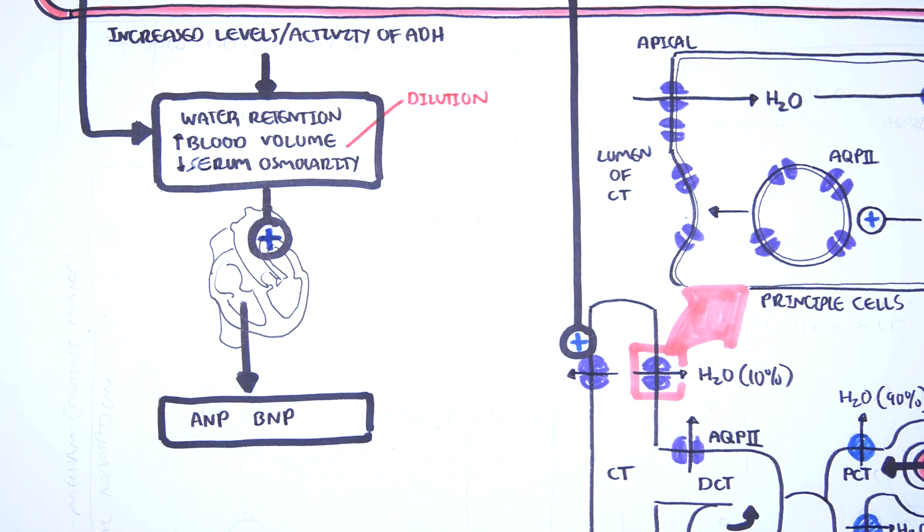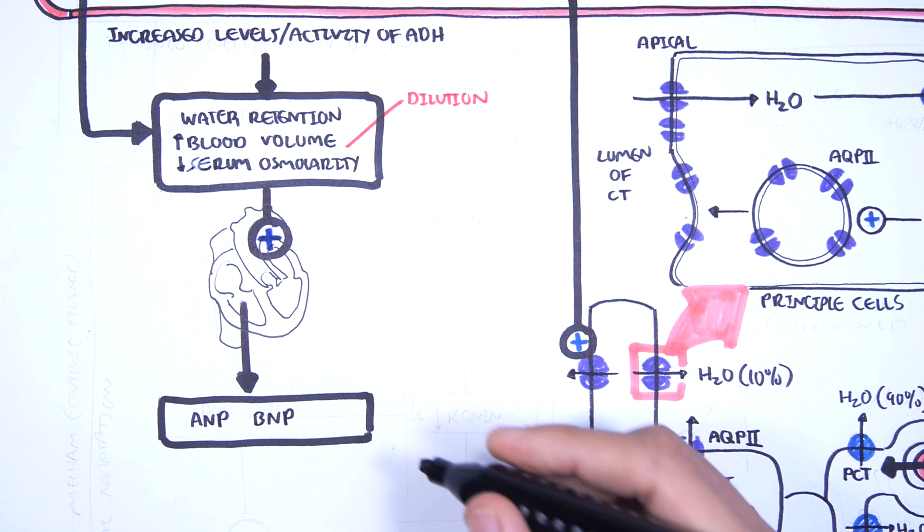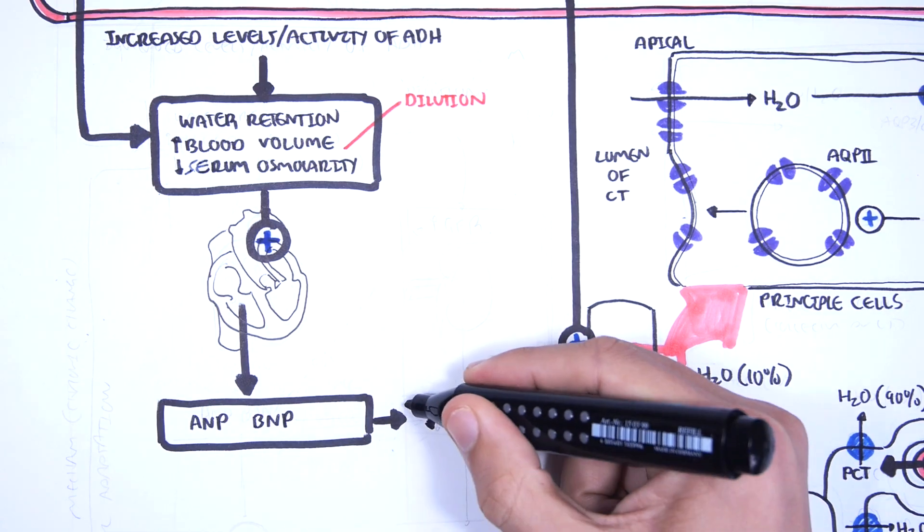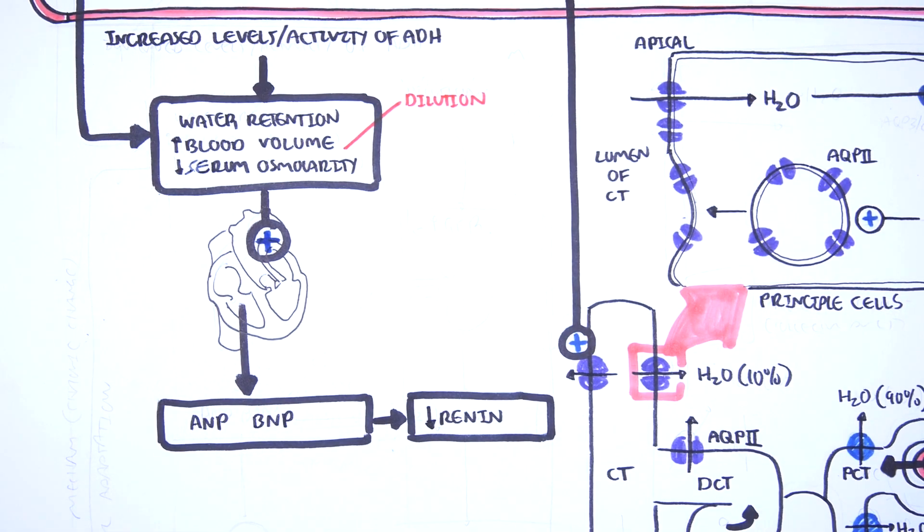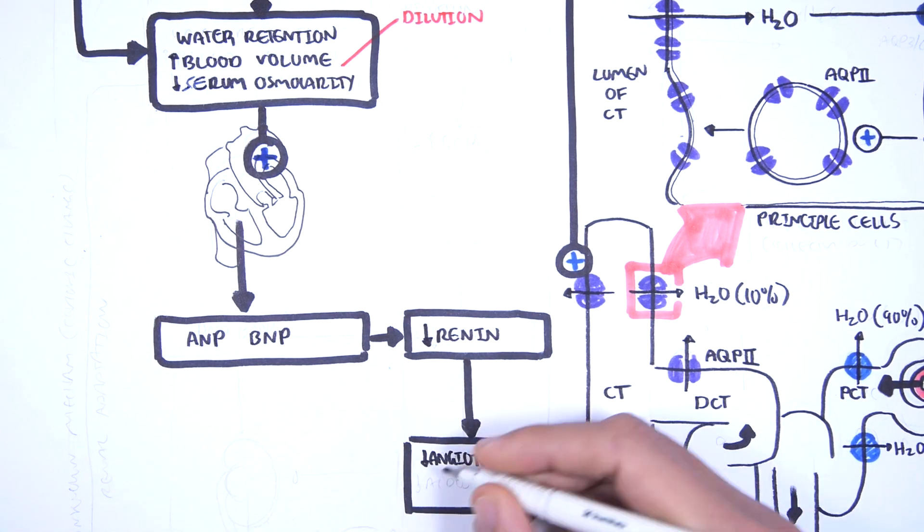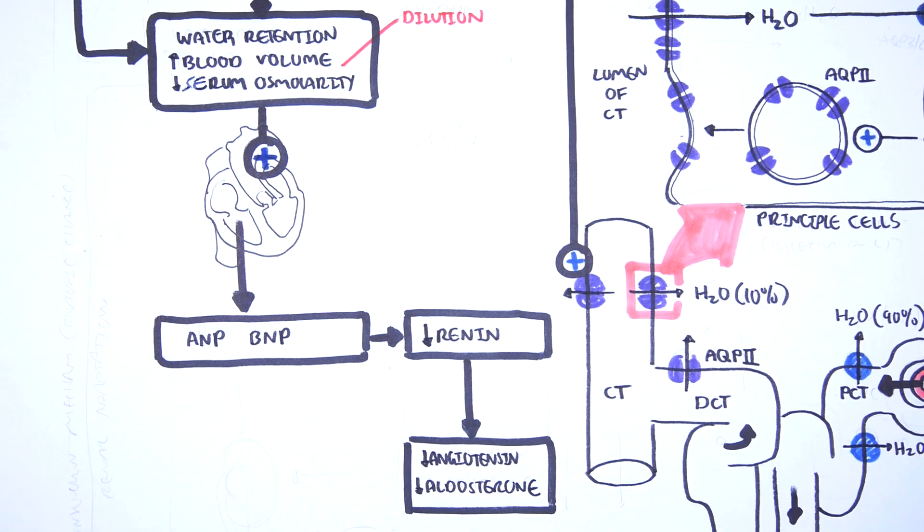Now, ANP and BNP inhibit renin release and activity through a few mechanisms. Regardless, the end result is a decrease in activity of the renin-angiotensin-aldosterone system. And because of this, you decrease angiotensin-2 function and also aldosterone function.